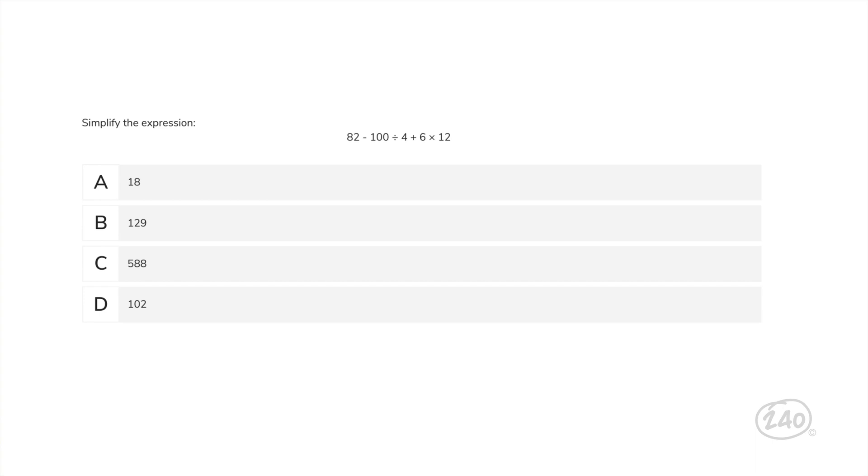Then we move to multiplication and division from left to right. So, 100 divided by 4 equals 25, and 6 times 12 is 72. So, now our expression is 82 minus 25 plus 72. We can simplify the remaining addition and subtraction from left to right. So, our final answer is 129. One question down.